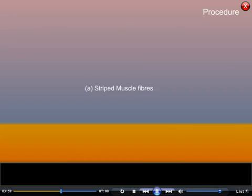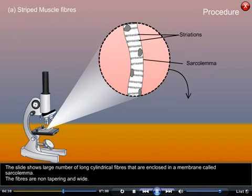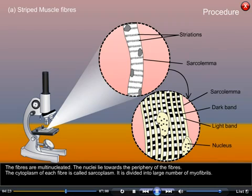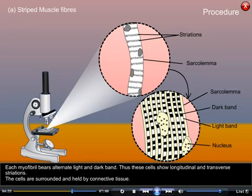2. Animal tissues. A. Striped muscle fibers: The slide shows a large number of long cylindrical fibers enclosed in a membrane called sarcolemma. The fibers are non-tapering and wide, and are multi-nucleated. The nuclei lie towards the periphery of the fibers. The cytoplasm of each fiber is called sarcoplasm and is divided into a large number of myofibrils. Each myofibril bears alternate light and dark bands, so these cells show longitudinal and transverse striations. The cells are surrounded and held by connective tissue.